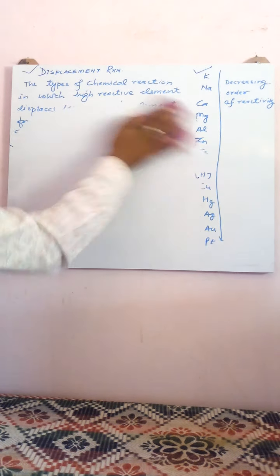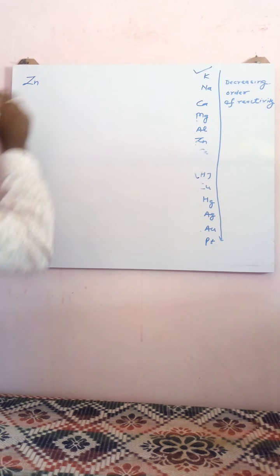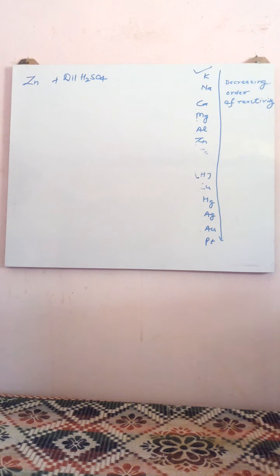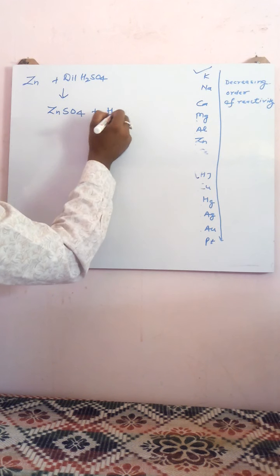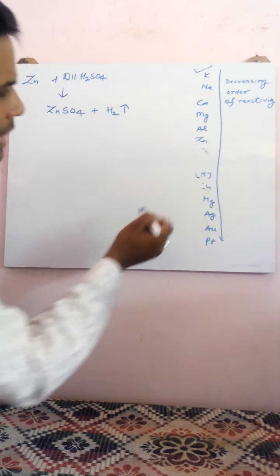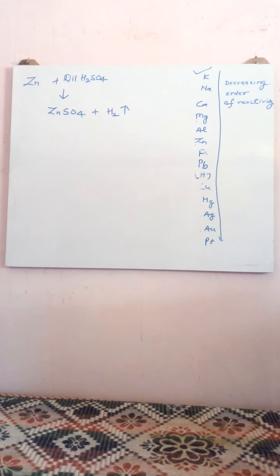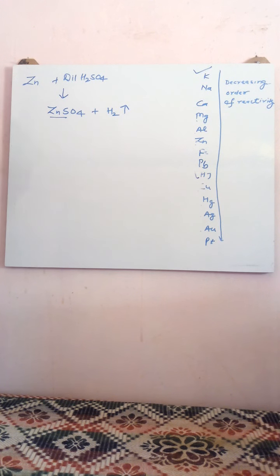I hope you understood the definition of displacement reaction and metals reactivity series. Let us understand with an example — the reaction of zinc granules with dilute sulfuric acid. When dilute sulfuric acid is poured over zinc metal, it forms zinc sulfate (ZnSO₄) plus hydrogen gas is released. In the reactivity series, zinc is placed above hydrogen, meaning zinc is more reactive than hydrogen, so zinc displaces hydrogen from sulfuric acid to form zinc sulfate.